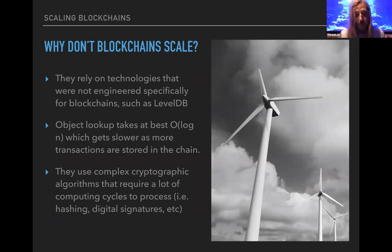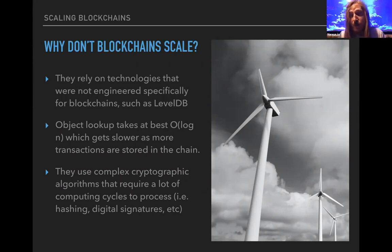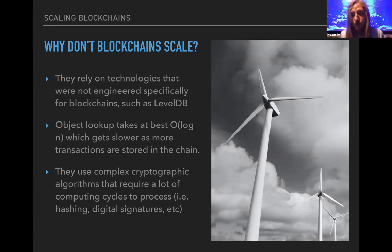Blockchains also use complex cryptographic algorithms requiring many computing cycles, such as hashing and elliptic curve digital signature algorithms. On my personal computer, doing a Brainpool 512-T1 curve multi-threaded, I was able to get about 7,000–8,000 signature verifications per second — a computational bottleneck alongside disk bottlenecks. If it takes 17 iterations to find one key, that's 17 disk seeks per operation. If you could make that one seek it would be much more efficient.